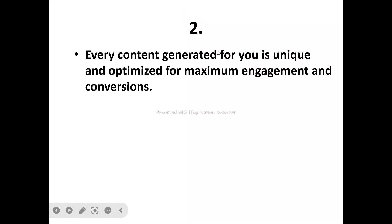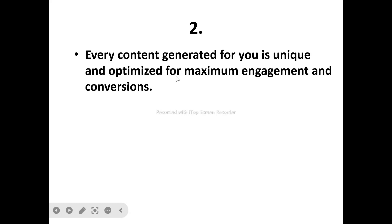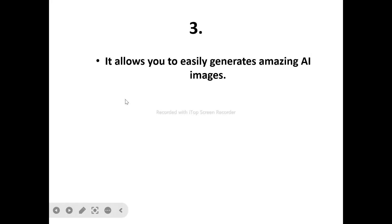Number two: every piece of content generated for you is unique and optimized for maximum engagement and conversion. Any content that CloudThink AI generates is unique only to you. It also helps you optimize it so you can get maximum engagement and conversion. It helps you write content that can compete for the first page on Google, increasing your ranking. Any content generated by CloudThink AI will be free of duplication — unique just to you and optimized for maximum engagement and conversion.